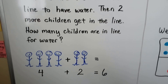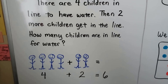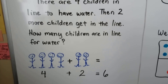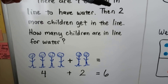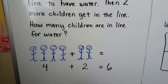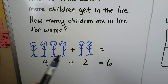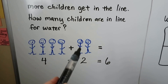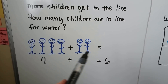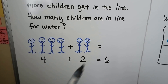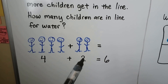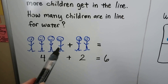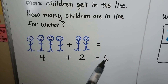We look at the important words. Four children are in the line, then two more children get in the line. Here's the four children — we can draw four people. We can draw two more people. Four plus two is one, two, three, four, five, six.